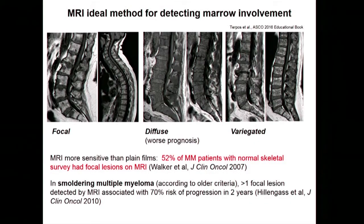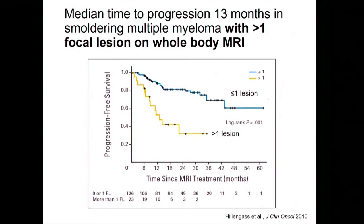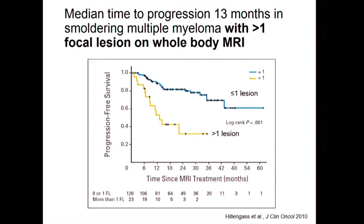There are various patterns of involvement, ranging from focal lesions to a diffuse pattern to a more salt-and-pepper pattern. A key finding is that patients felt to have smoldering multiple myeloma who have more than one focal lesion picked up by MRI have a higher likelihood of progressing to active myeloma. This has been informative in terms of the new diagnostic criteria for multiple myeloma.